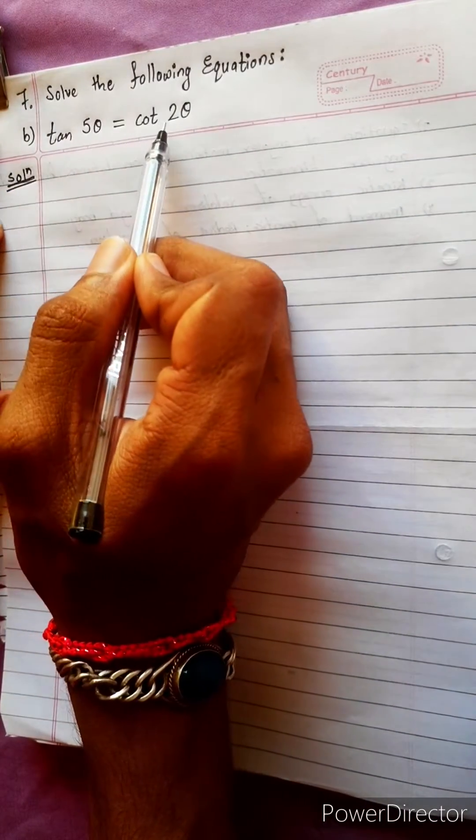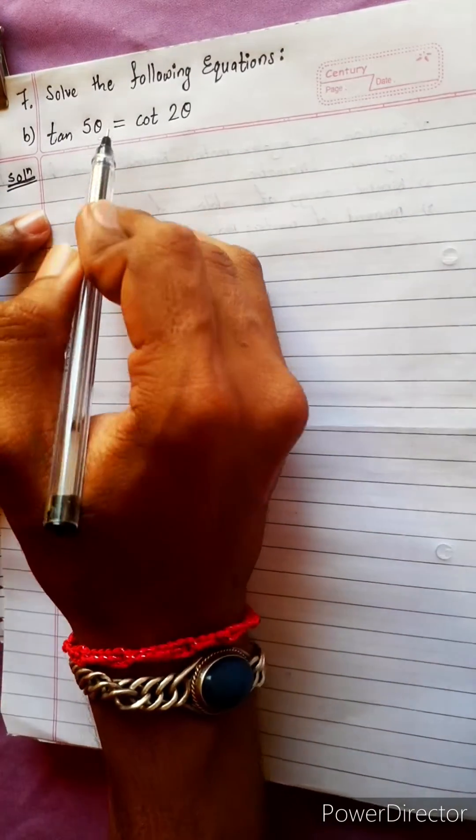Solve the following equations: tan 5θ equals cot 2θ. It is the question. It is same like the previous question.